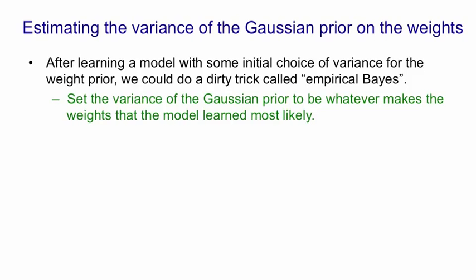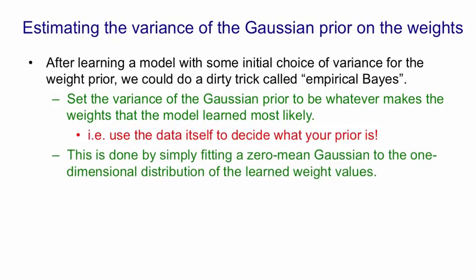This really violates a lot of the presuppositions of the Bayesian approach. We're using the data to decide what our prior beliefs are. So once we've learned the weights, we fit a zero-mean Gaussian to the one-dimensional distribution of the learned weights, and then we take the variance of that Gaussian and use that for our prior.